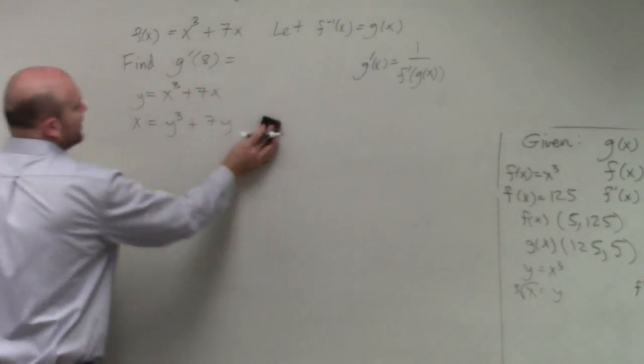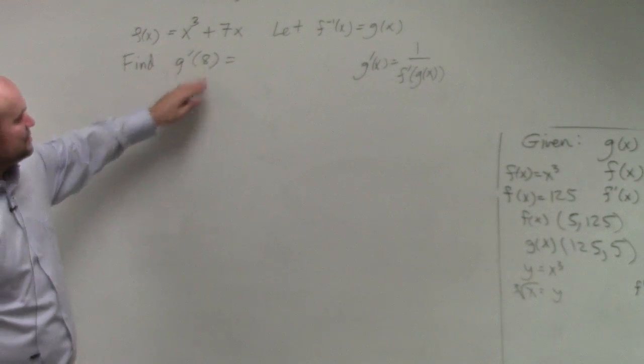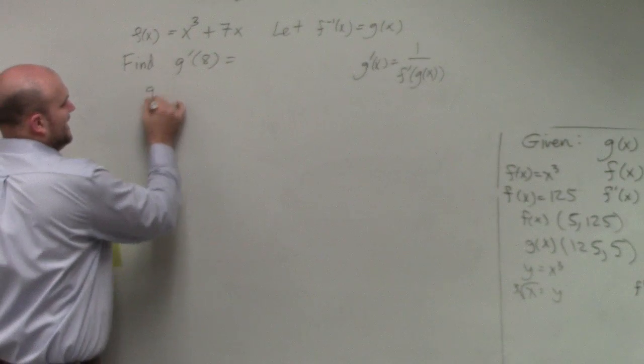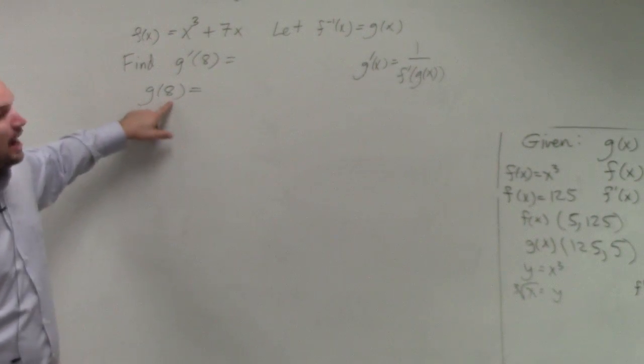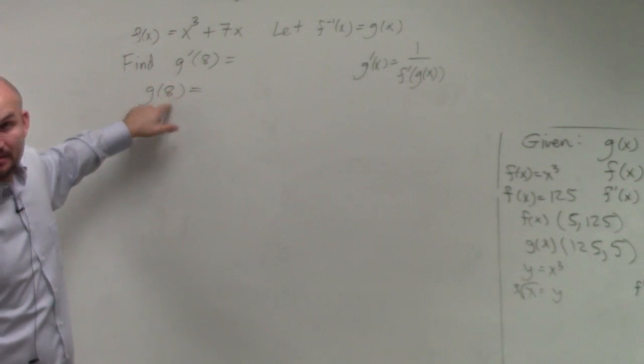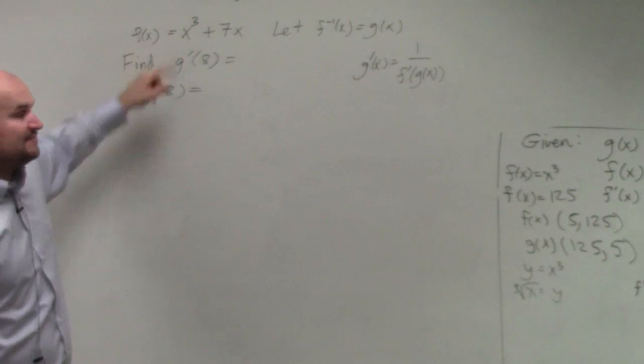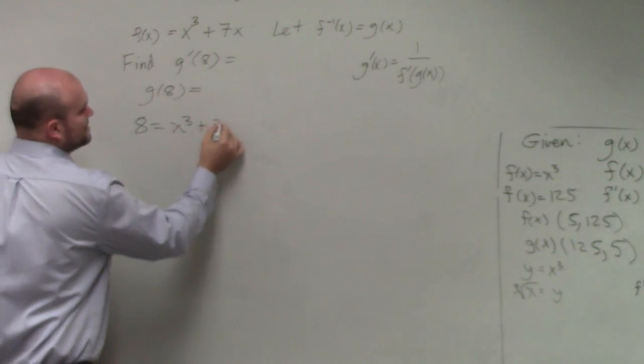So what we can do, though, is just think about this. Remember, here's my g of 8. 8 is the output of my function when I plug in some value, right? That's the output of my f(x) function. So therefore, I can say 8 = x³ + 7x.